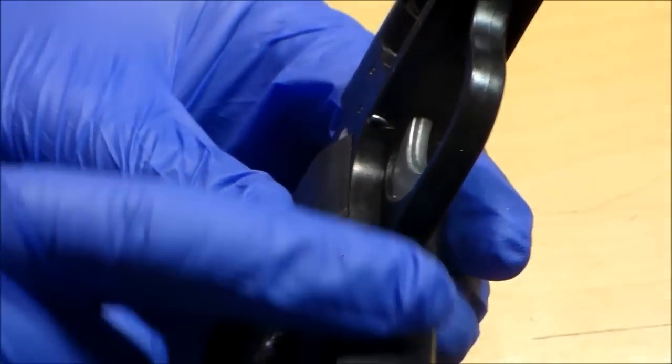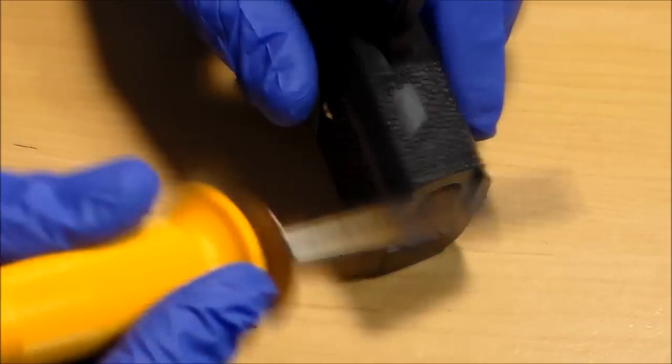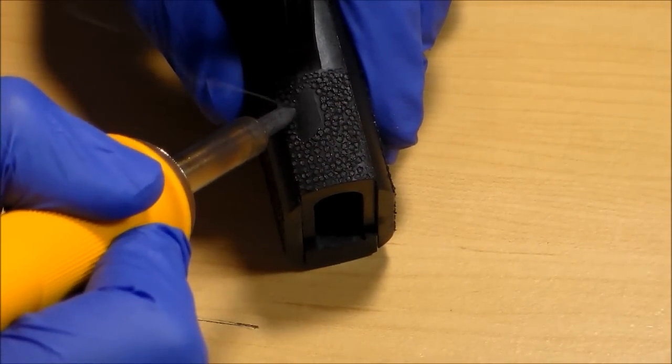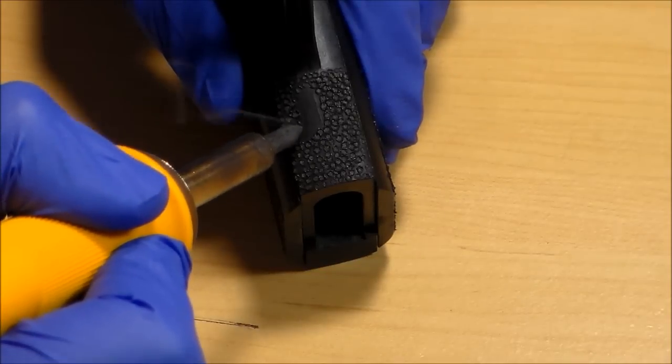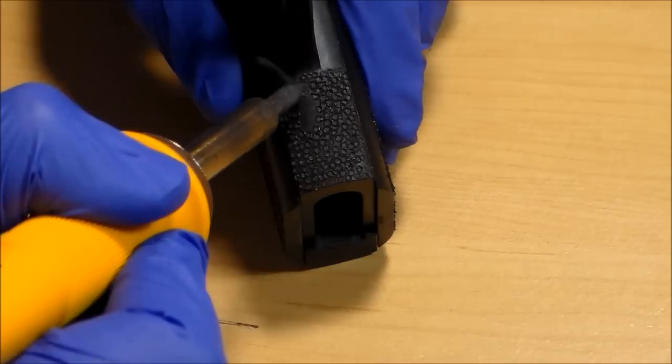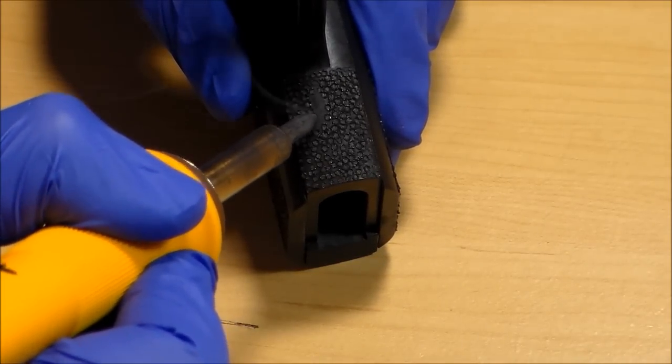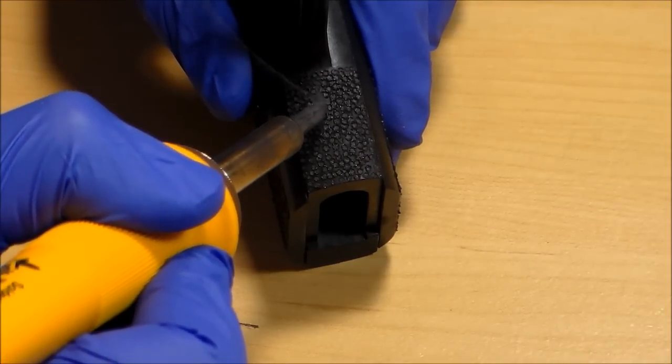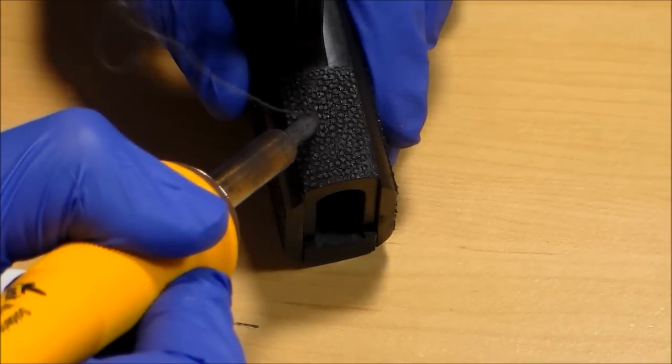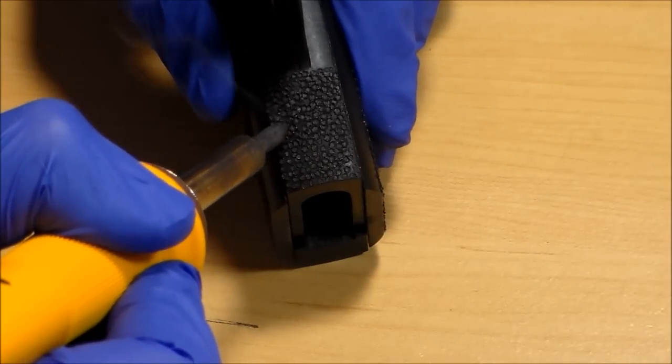I'm just finishing off on this front area. Same principle—do the outer border first and work your way to the middle. I just noticed this part is a different type of plastic than the grip panels. This is the frame of the gun, and as you can see, it produces more fumes. This is a harder polymer.